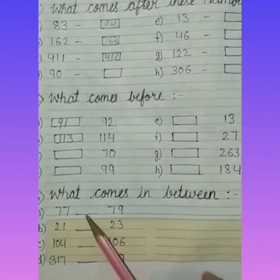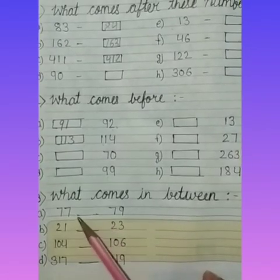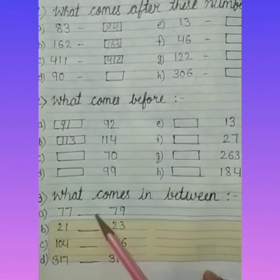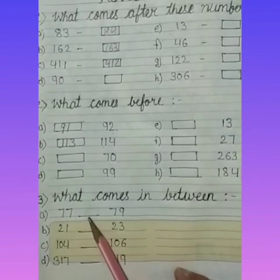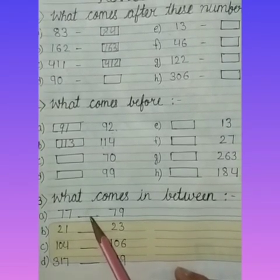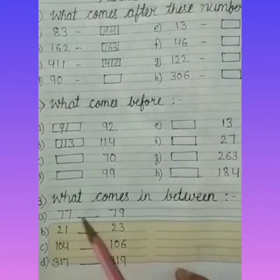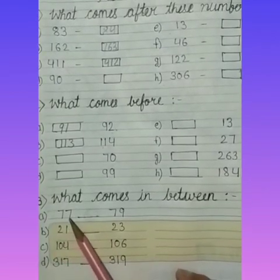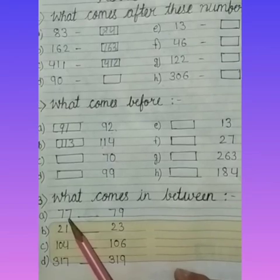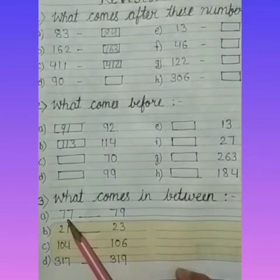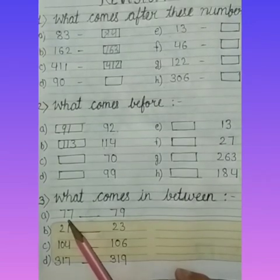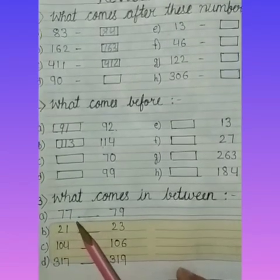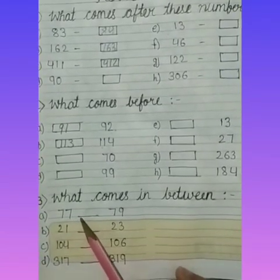Between means two numbers are given and there is a gap — we will fill in the between number. For example: 71, blank, 73. We count: 71, 72, 73, 74, 75.